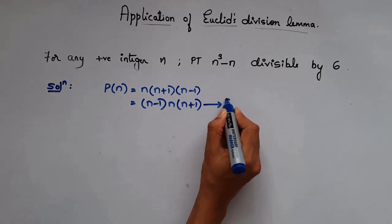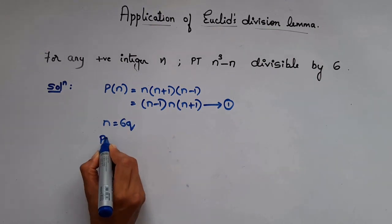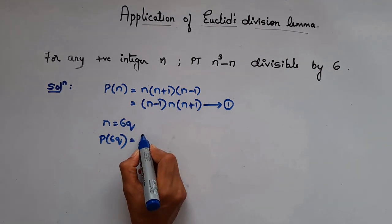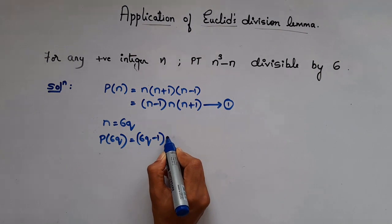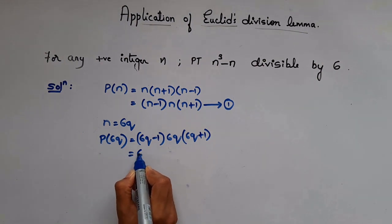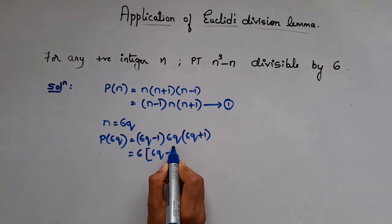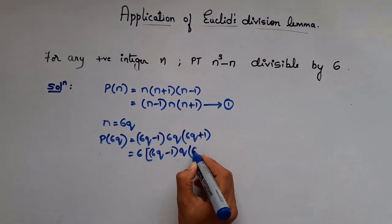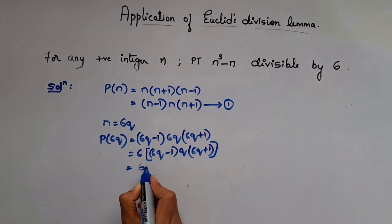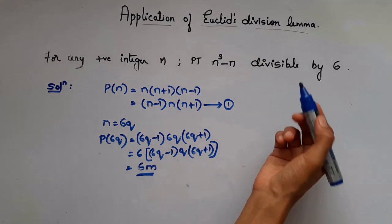Taking equation P(n) = (n-1)·n·(n+1): when n = 6q, P(6q) = (6q-1)·6q·(6q+1). We can take the 6 out, leaving 6·q·(6q-1)·(6q+1). Taking the remaining terms as m, this becomes 6m. Clearly it is divisible by 6.